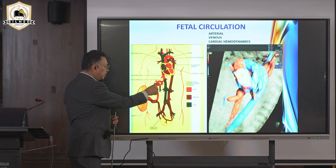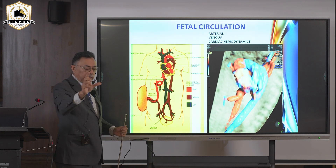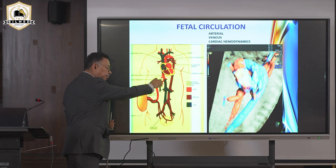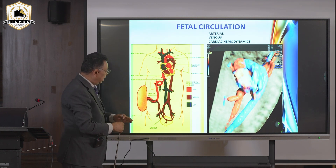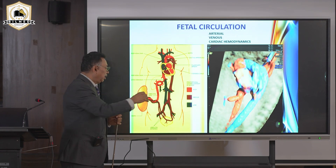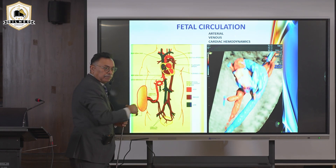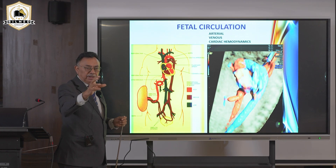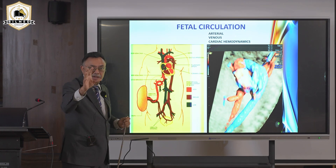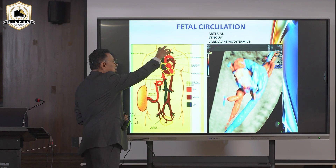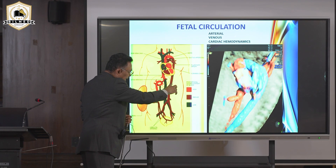For pure blood to reach the fetus: the umbilical vein must be dilated and non-pulsatile so all pure blood goes to the fetus; the ductus venosus must be dilated with low resistance so all pure blood goes to the heart; and the fetal aorta must be normally dilated — a muscular artery at 0.7 resistance — so the purest blood reaches the brain.